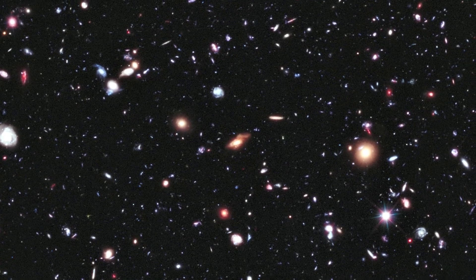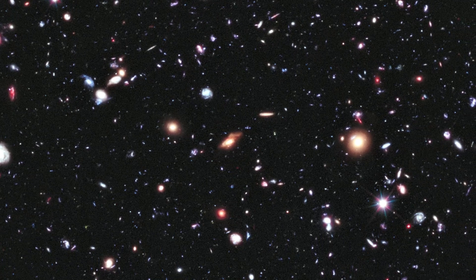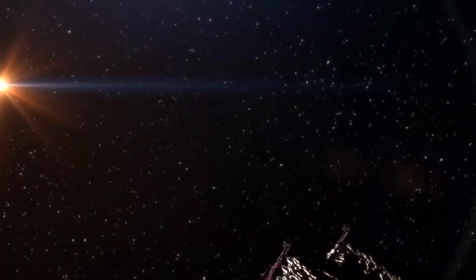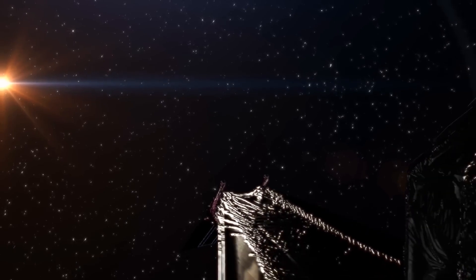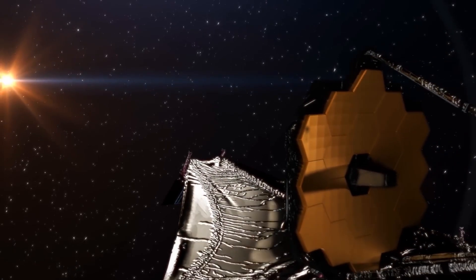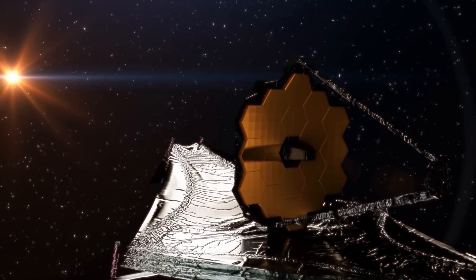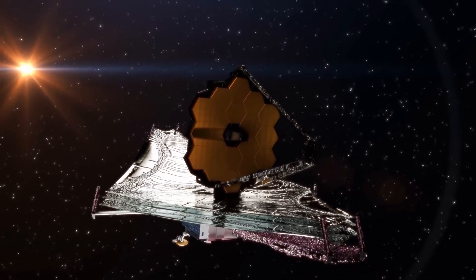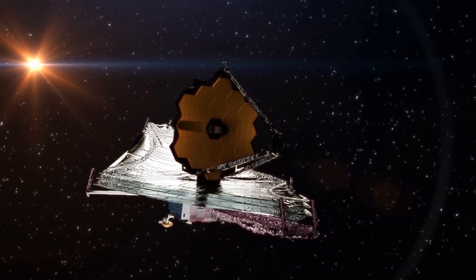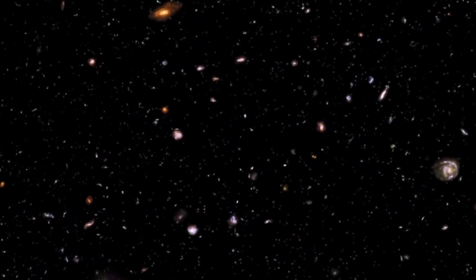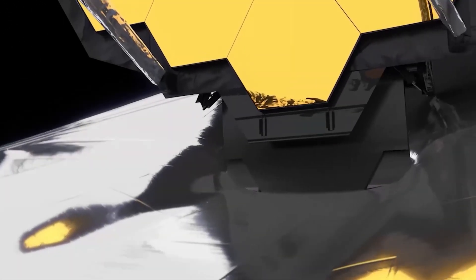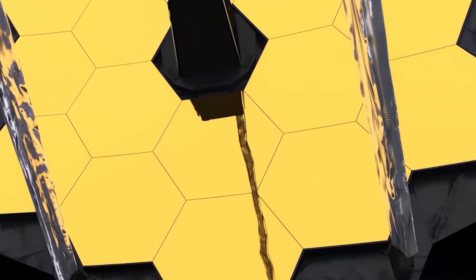Spectral data confirmed that these galaxies are at the edge of our view, some even further away than Hubble could see. This discovery is crucial because it validates one of the most important tasks of the James Webb Space Telescope, which is to study the early universe through light that has been traveling for more than 13.5 billion years. The ability to measure extreme redshifts is what sets James Webb apart, allowing astronomers to peer into the infrared range and observe the earliest galaxies in the universe.